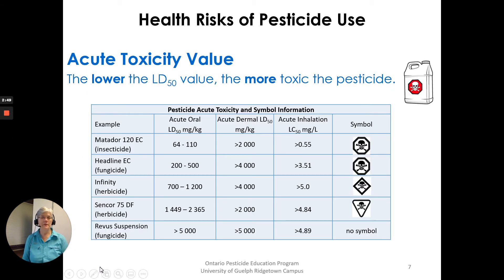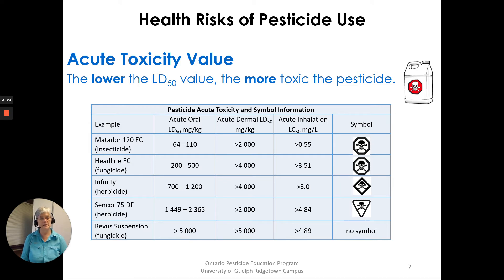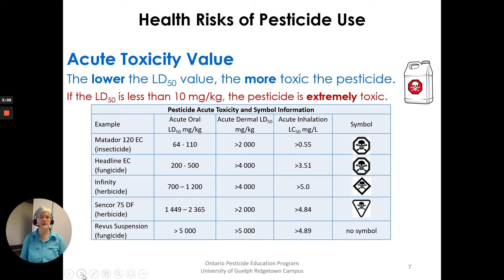The lower the LD50 value, the more toxic the pesticide. For example, Matador — the example label in the book — has an acute oral LD50 of 64 to 110 milligrams per kilogram, so it will have a danger poison symbol on it. Revis suspension is a fungicide with a very high acute oral LD50 and a high acute dermal LD50, so no symbol is required on the front of that label. If the LD50 is less than 10 milligrams per kilogram, the pesticide is extremely toxic — again, the lower the number, the more toxic the pesticide.